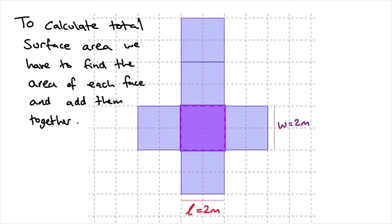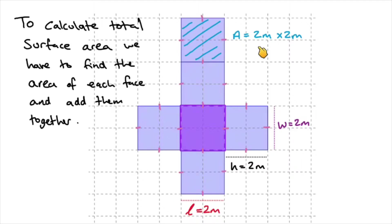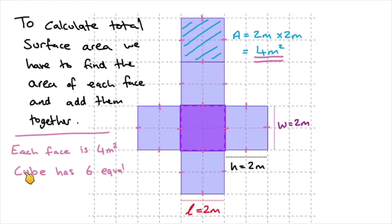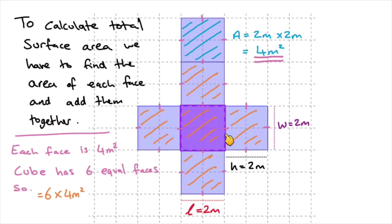Here you can see the net of the cube. We have a length of 2 meters, a width of 2 meters and a height of 2 meters — all edges are the same length because it's a 2-meter cube. The area of the first face is 2 meters times 2 meters which gives 4 meters squared. Each face is 4 meters squared and the cube has 6 equal faces, so 6 times 4 meters squared gives us 24 meters squared. The cube's total surface area is 24 meters squared.